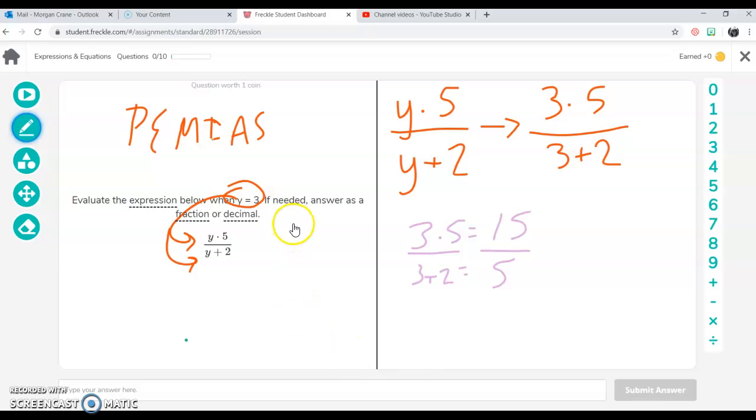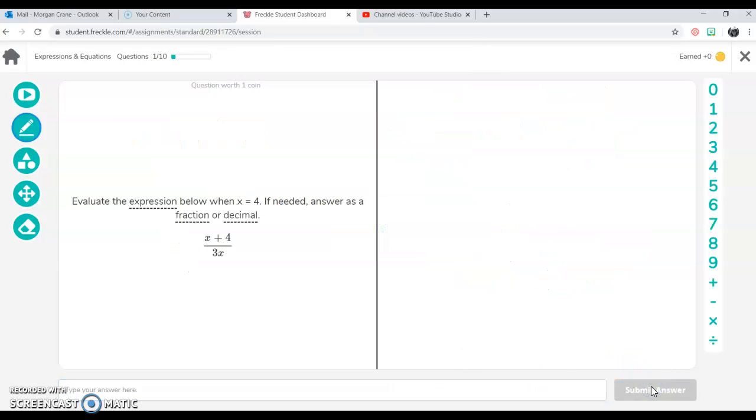So it says, if needed, answer as a fraction or a decimal. This is great as a fraction, except we know that 15 and 5 can both be divided by 5. We need to make sure that we're reducing to simplest form. So 15 divided by 5 is 3, and 5 divided by 5 is 1. So our answer, we're going to type here at the bottom, would be 3 over 1. You're going to want to use that diagonal for that. Maybe they just want 3. There we go.